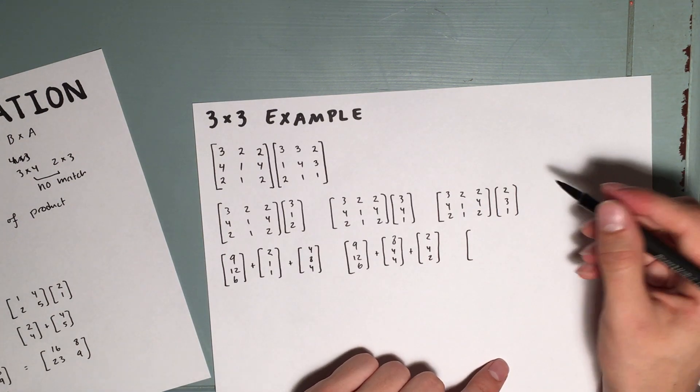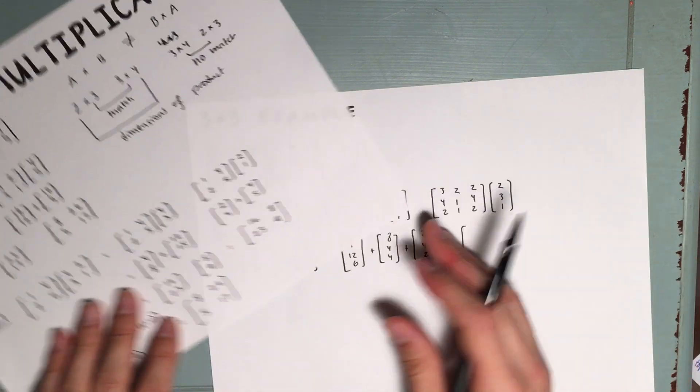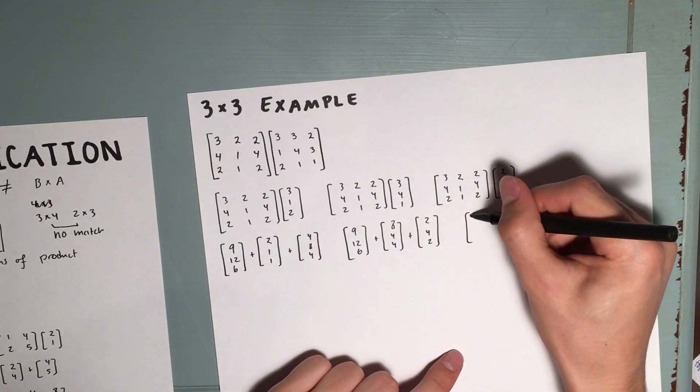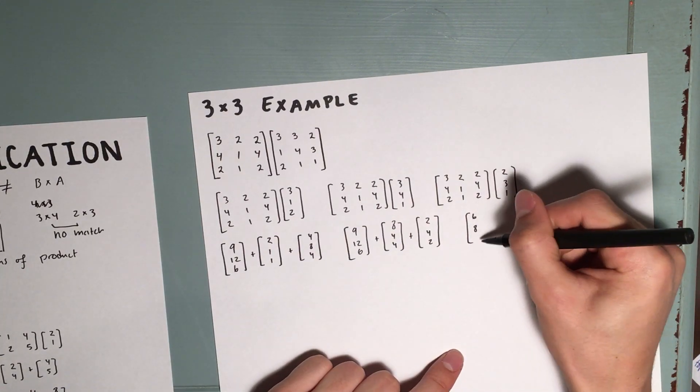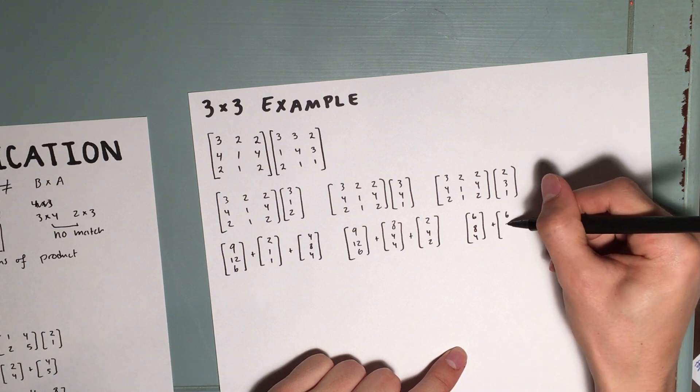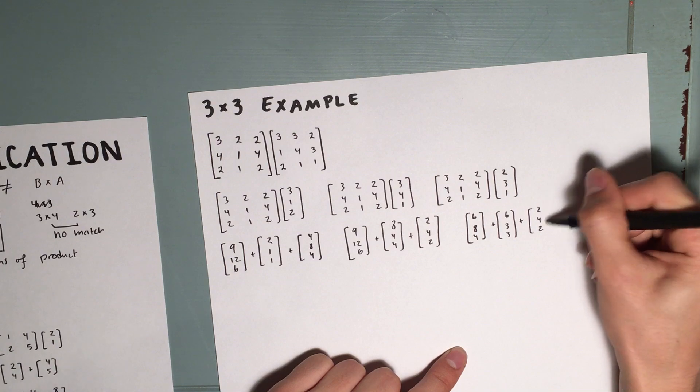Of course, doing a 3 by 3 is a bit tedious, so if you do prefer the original, or if you do prefer the second method, then feel free to use it. 6, 8, 4. 6, 3, 3. 2, 4, 2.